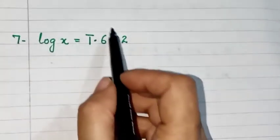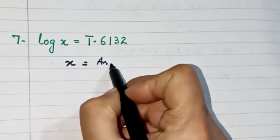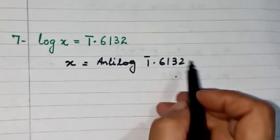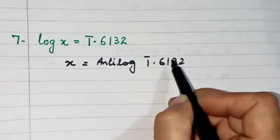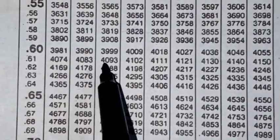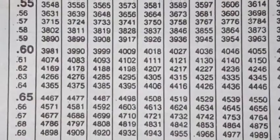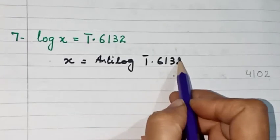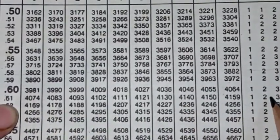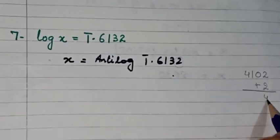Now I am doing question number 7, in which the characteristic is negative. We write x equals anti-log of 1̄.6132. First, we find the mantissa part in the anti-log table: we go to row 0.61, column 3, which gives 4102. We write 4102 in the rough column. Then we go to the mean difference table for 2 in the same row of 0.61, which gives 2. We add 2 to get 4104.